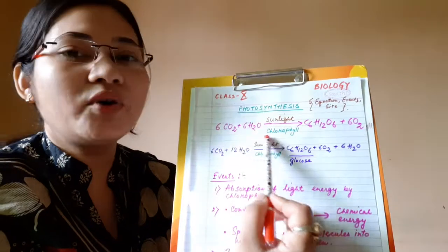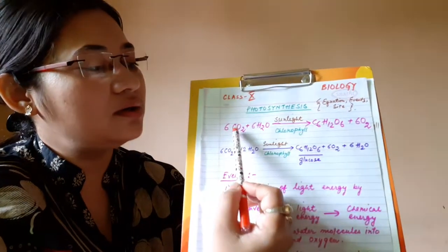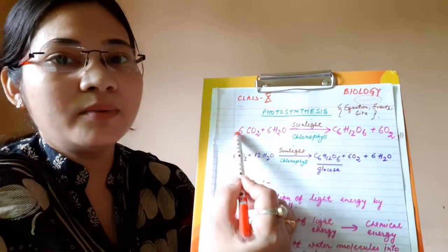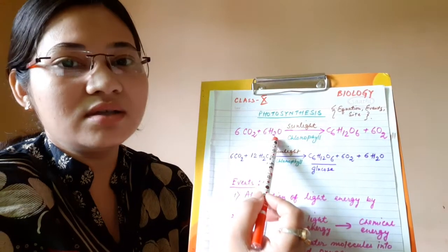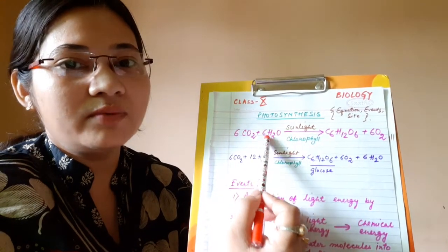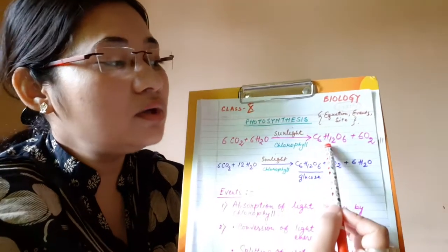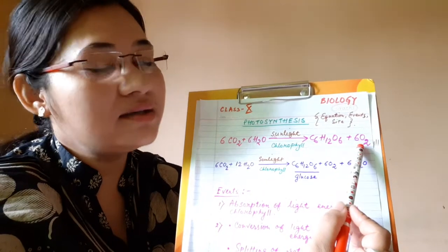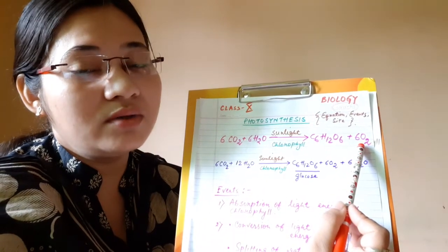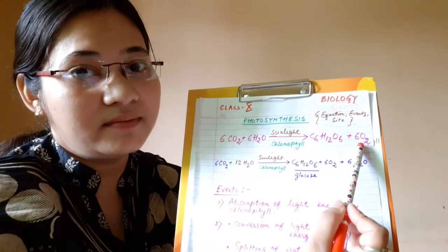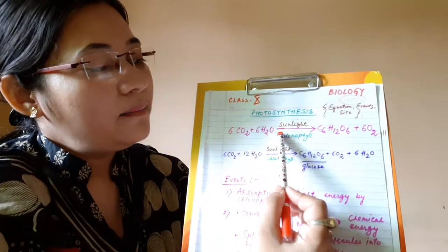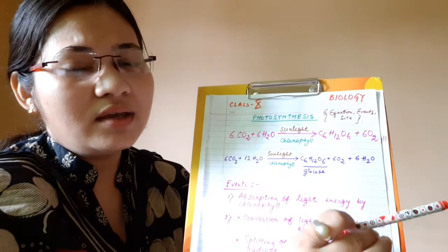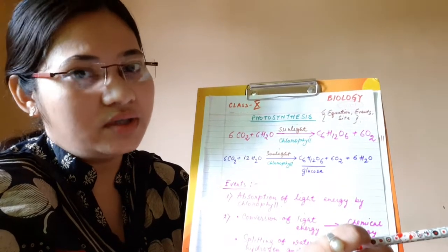During the process of photosynthesis, six molecules of carbon dioxide combine with six molecules of water to produce only one molecule of glucose and six molecules of oxygen. This is the general equation for photosynthesis.